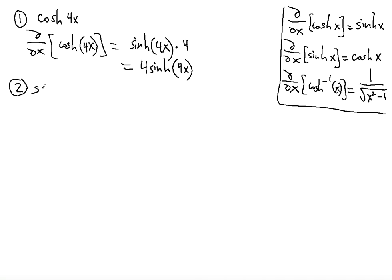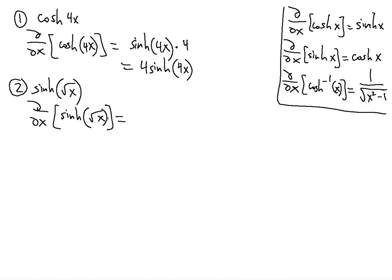The second example is to find the derivative of sinh of square root of x. To find its derivative, we take the derivative of sinh first — and we know the derivative of sinh is cosh — so we get cosh of radical x.